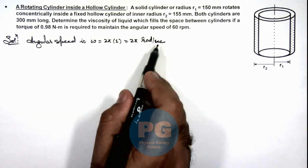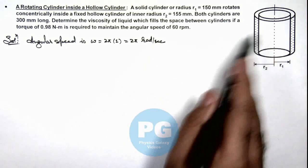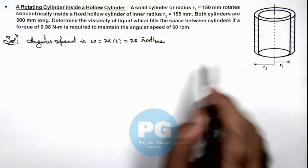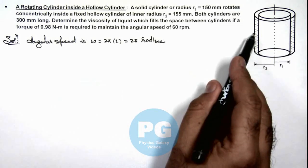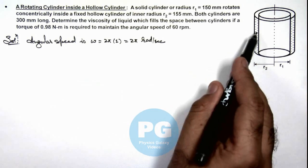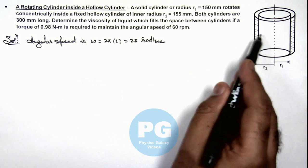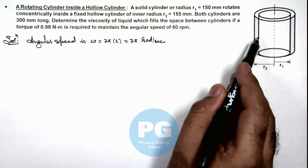And to maintain it we need to apply the torque equal to the torque of viscous forces on it. So in this situation, the layer of liquid which is in contact with the outer cylinder will be at rest, and the layer of liquid which is in contact with the rotating cylinder will be having a speed equal to r1 omega.